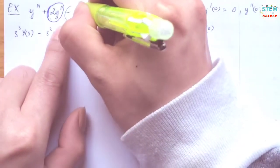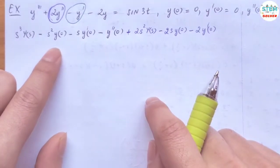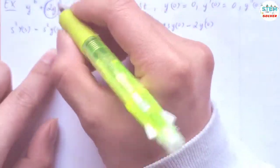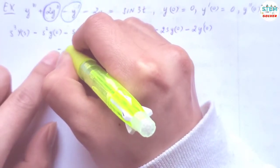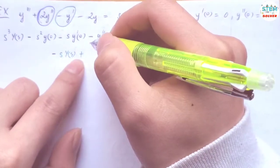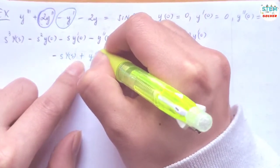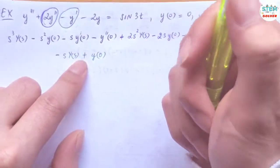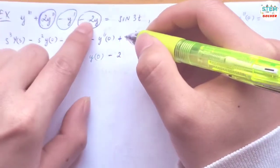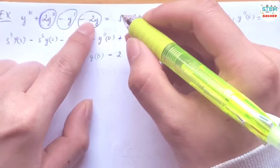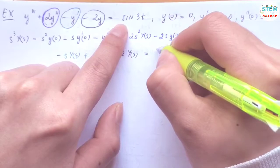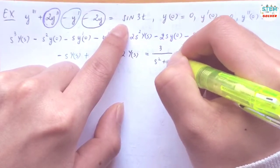Now for negative y prime: you have negative s to the first times capital Y(s), minus minus becomes plus s to the zero times y(0). And for the last term, minus 2 times — since there's no derivative — we have negative 2 times capital Y(s). The Laplace transform of sin(3t) equals 3 over s squared plus 9.